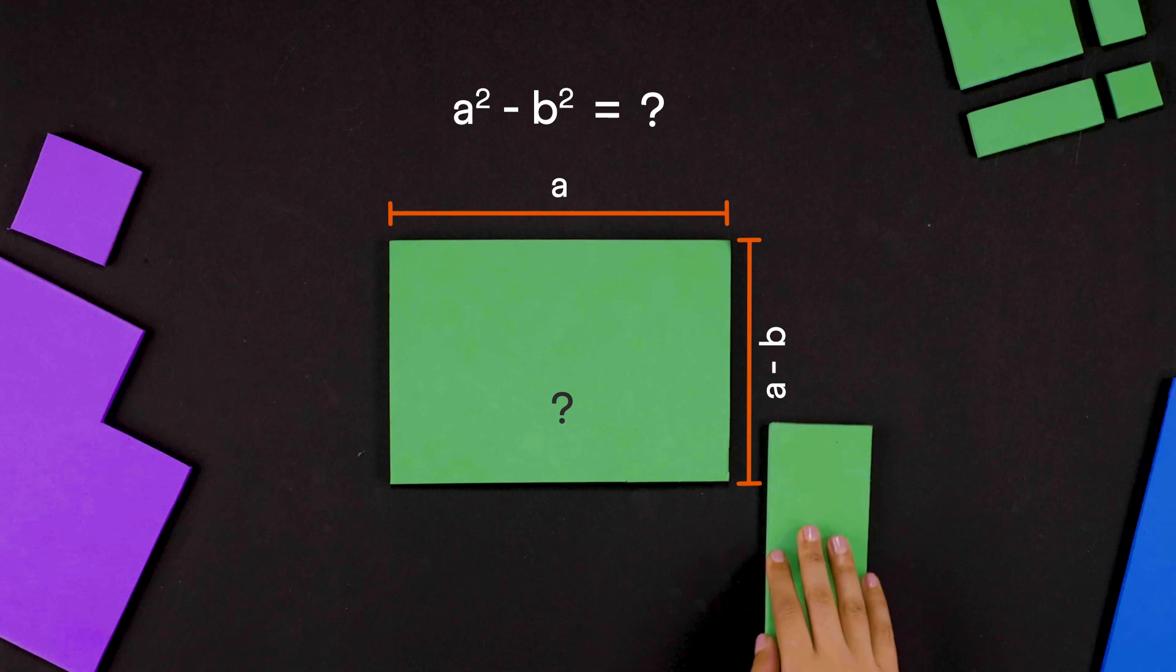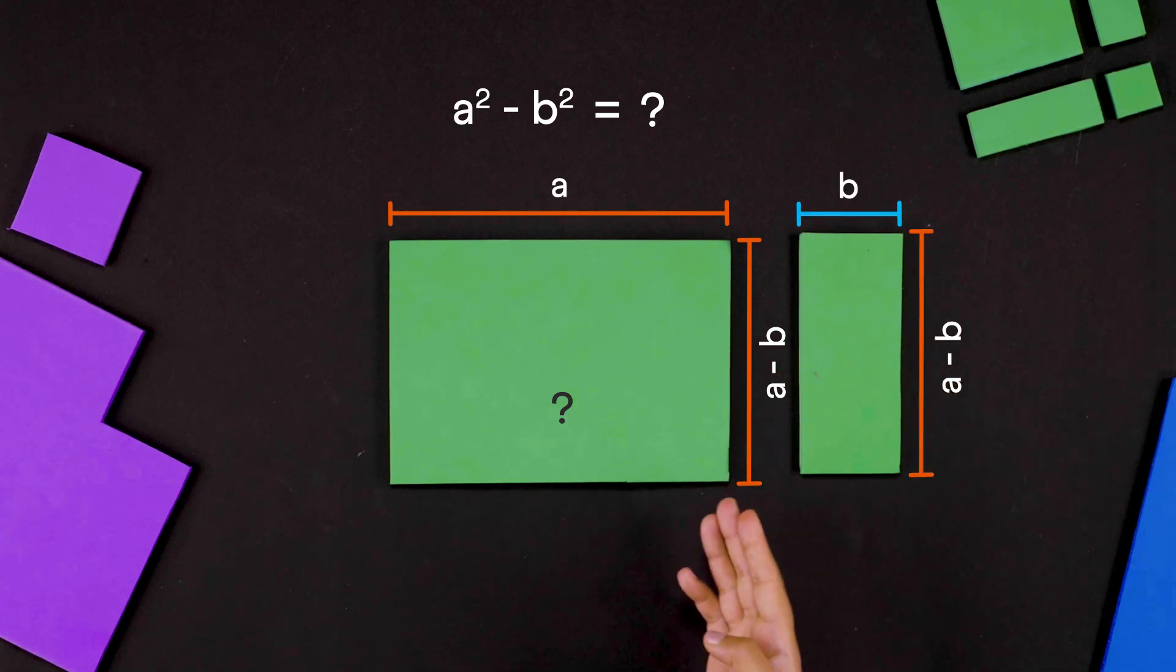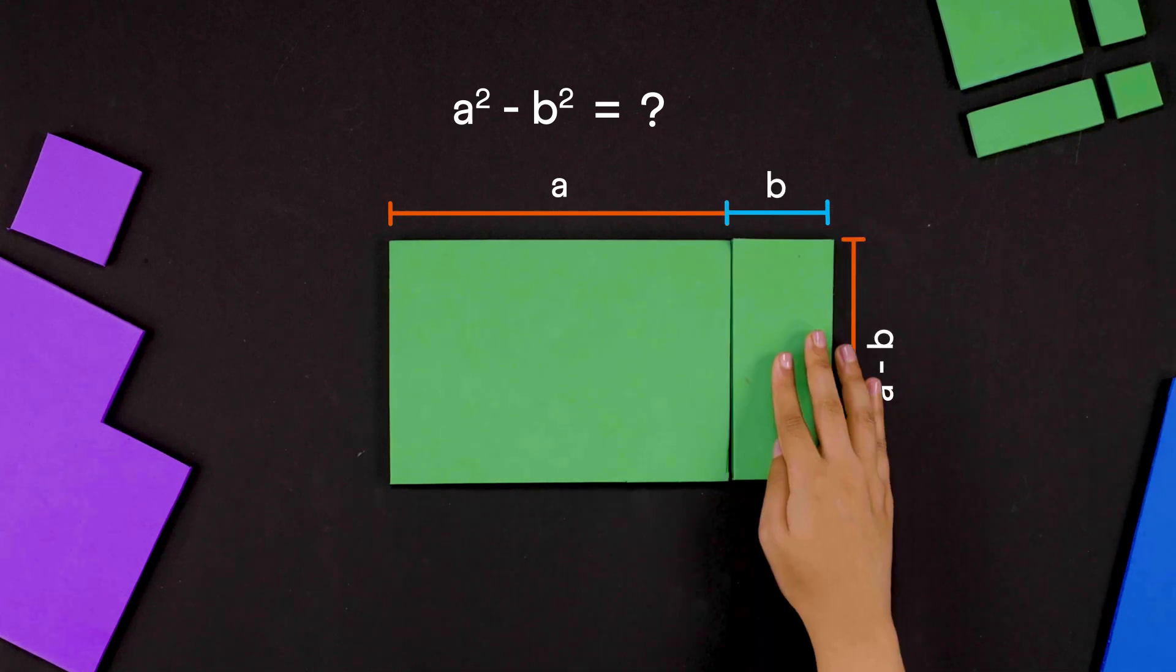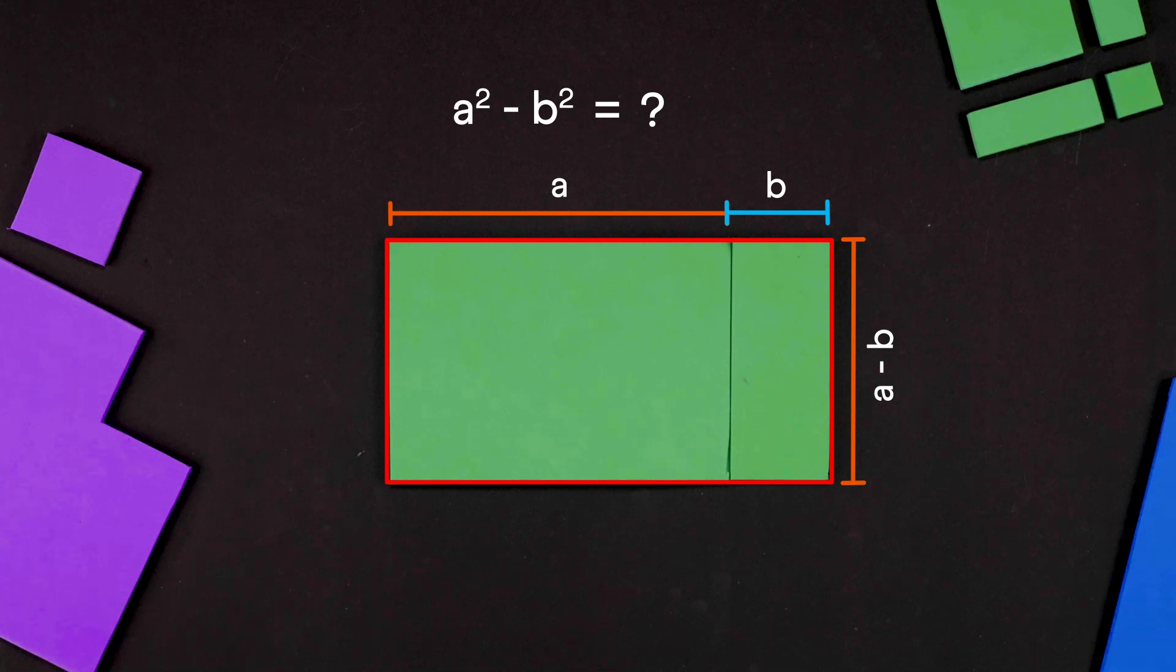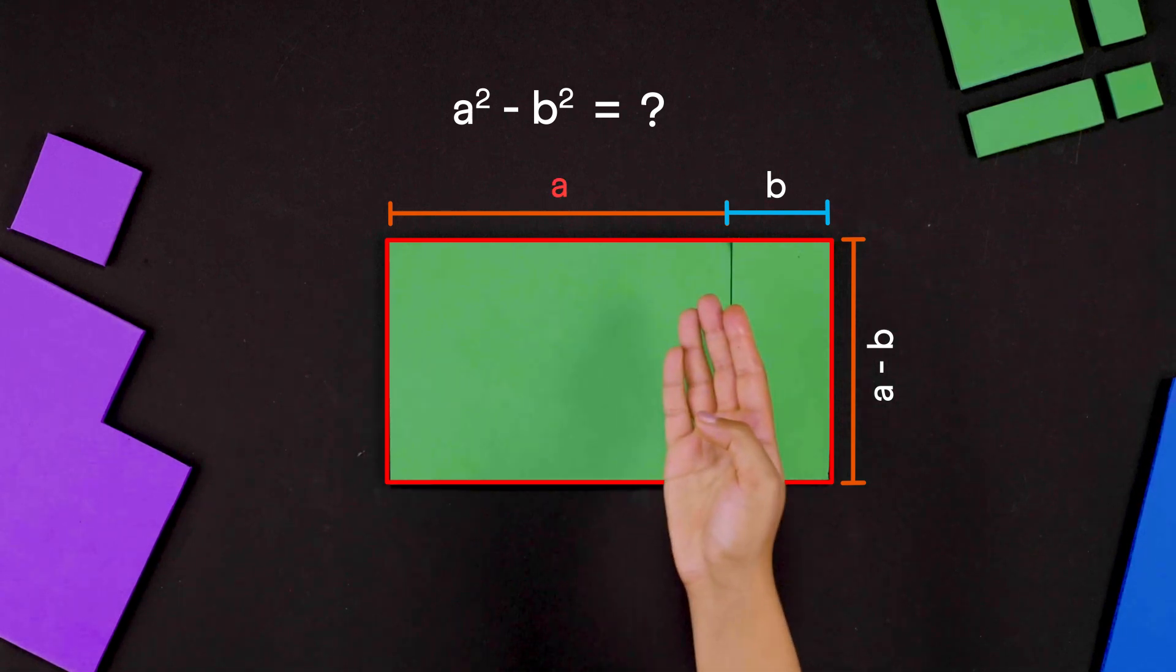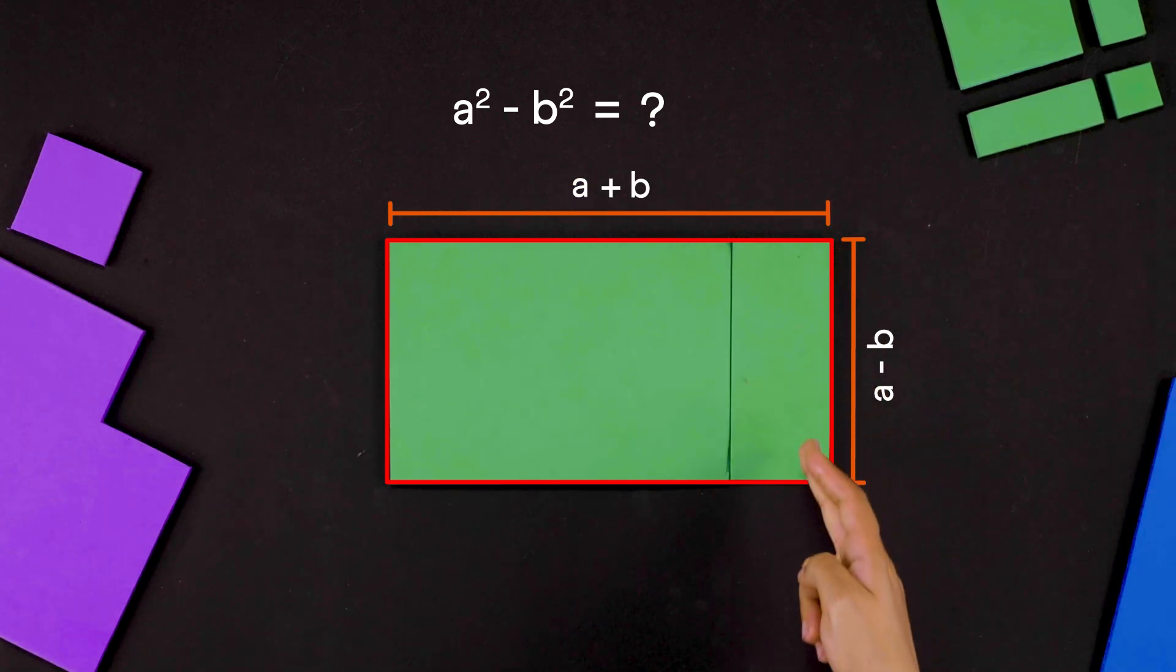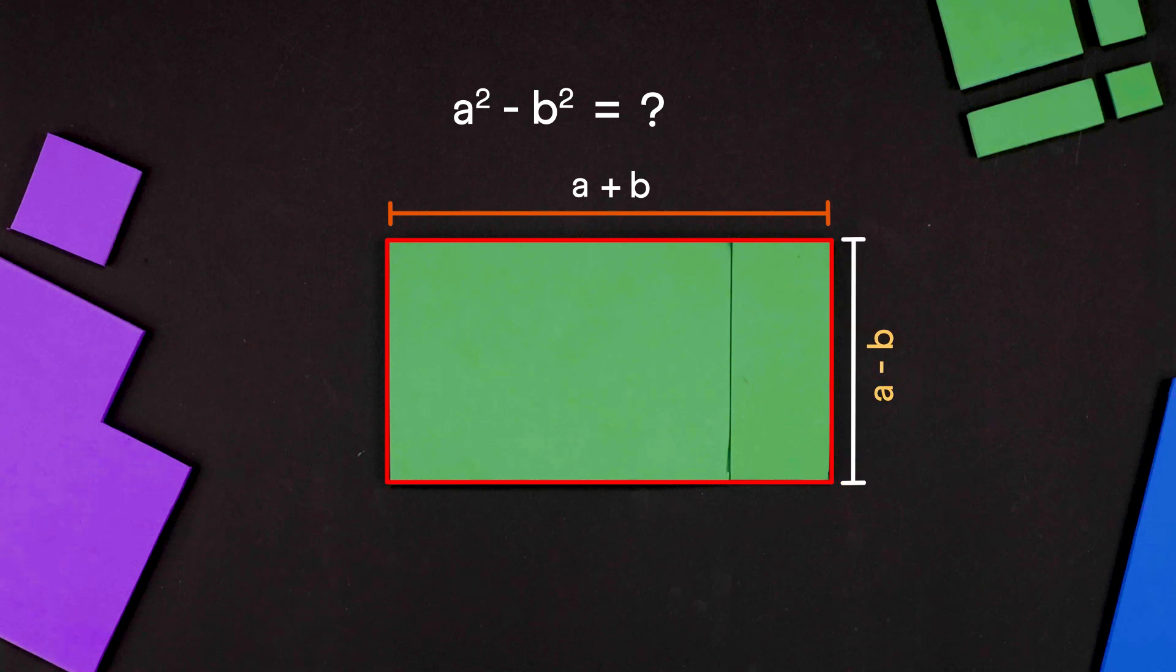Let's rearrange them. Since these two sides are equal, they will perfectly align to form a bigger rectangle. Its longer side equals a plus b and its shorter side equals a minus b. So its area is a plus b times a minus b. And that's what we had to find.